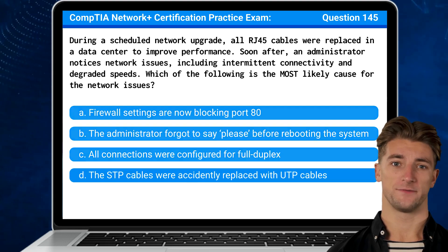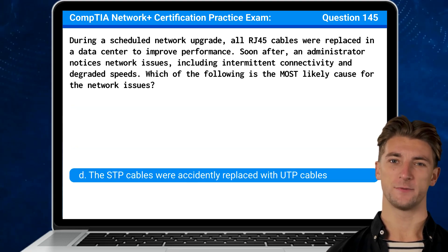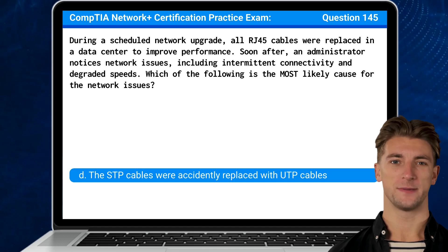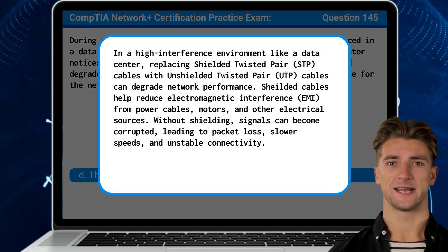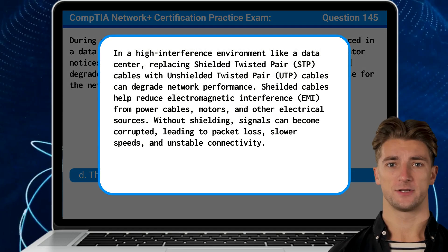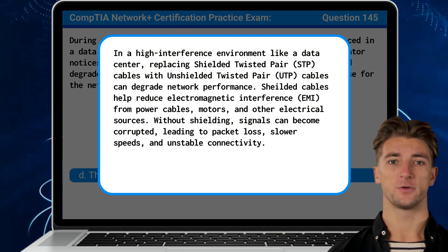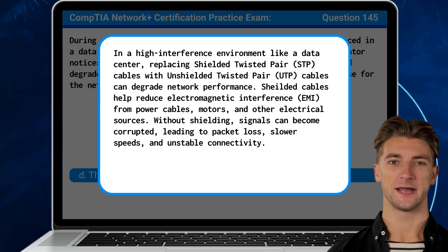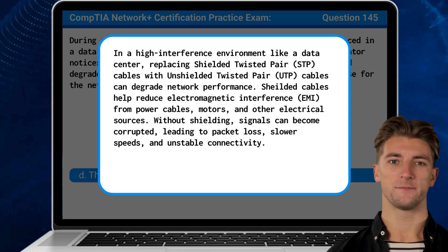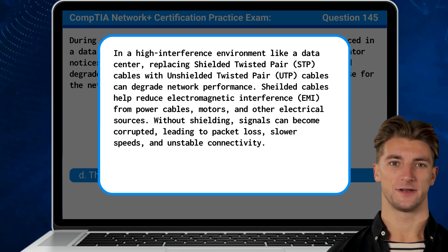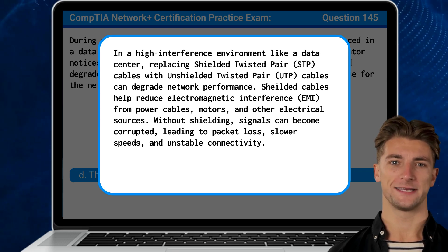The answer is D. The STP cables were accidentally replaced with UTP cables. In a high-interference environment like a data center, replacing shielded twisted pair cables with unshielded twisted pair cables can degrade network performance. Shielded cables help reduce electromagnetic interference from power cables, motors, and other electrical sources. Without shielding, signals can become corrupted, leading to packet loss, slower speeds, and unstable connectivity.